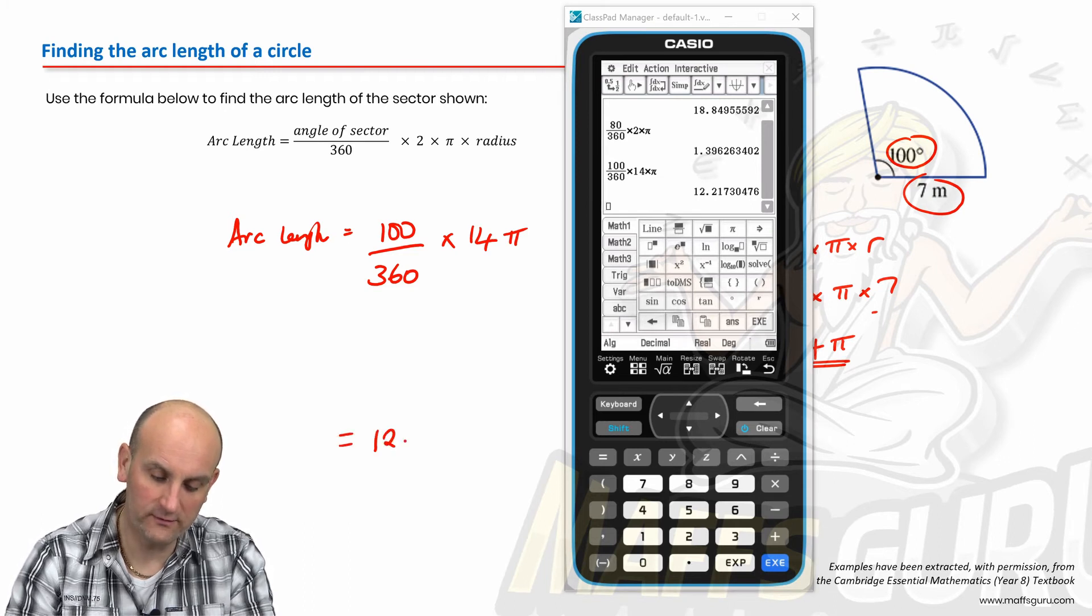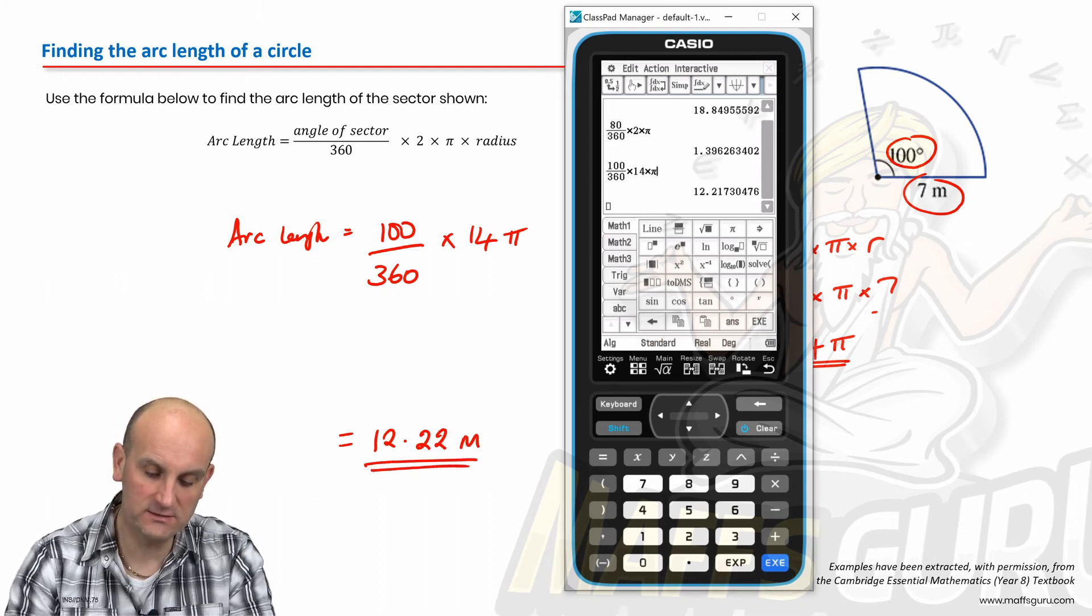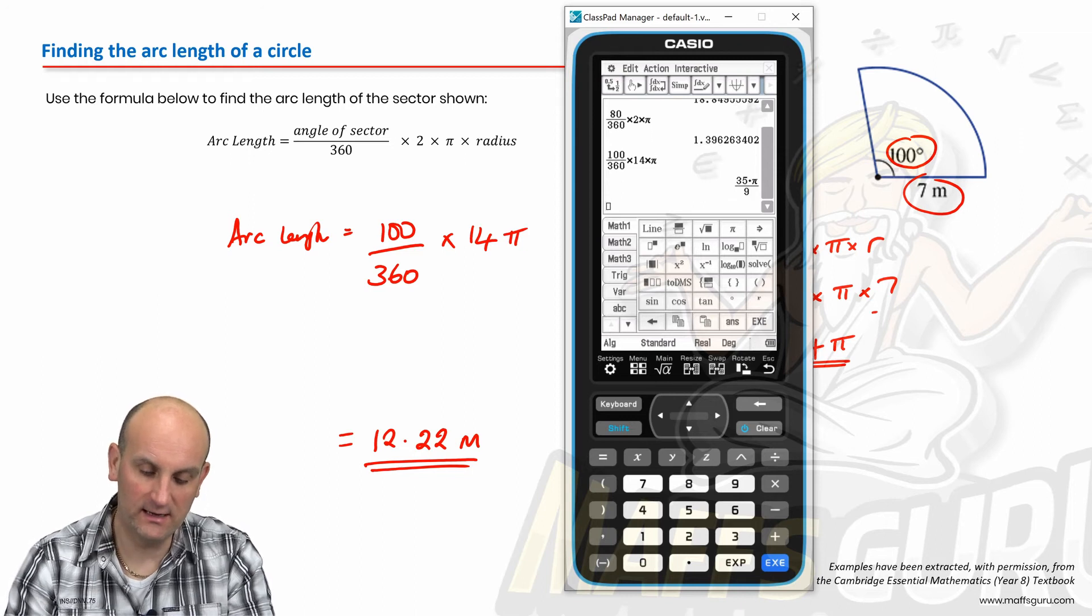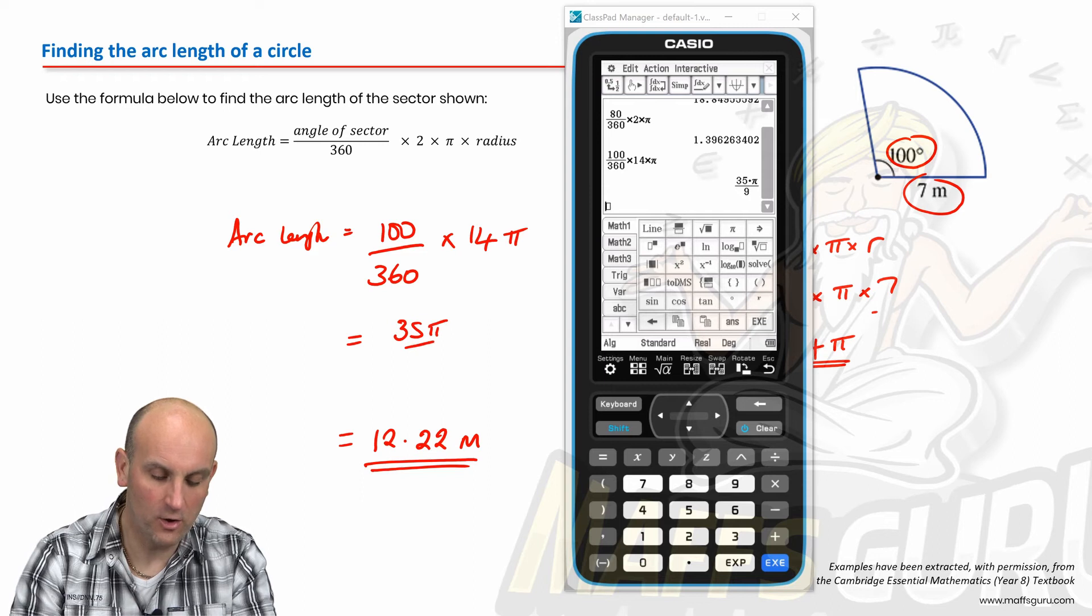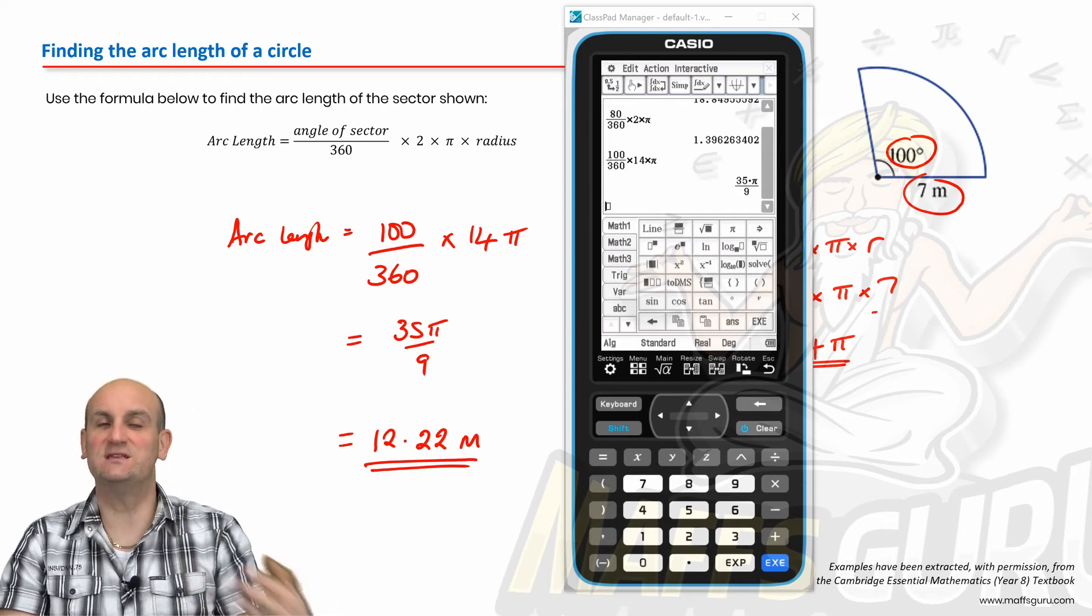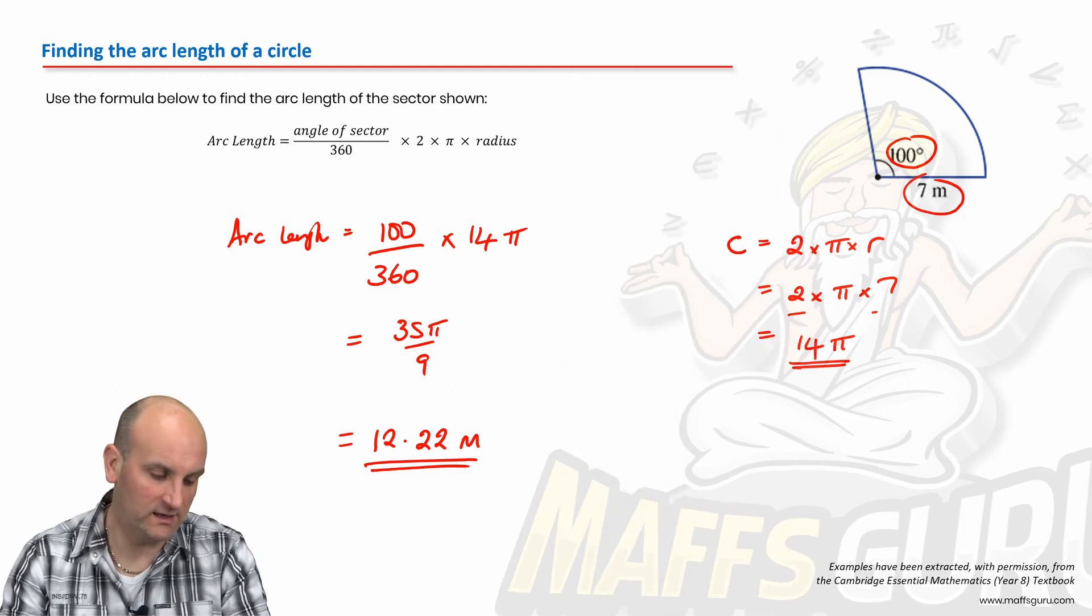But if I tap that and go back to standard and hit enter, then I get 35 pi on 9. 35 pi on 9 as well. So actually using exact and decimals can be really, really helpful to me. Did they want anything else? Use it below formula to find the arc length.